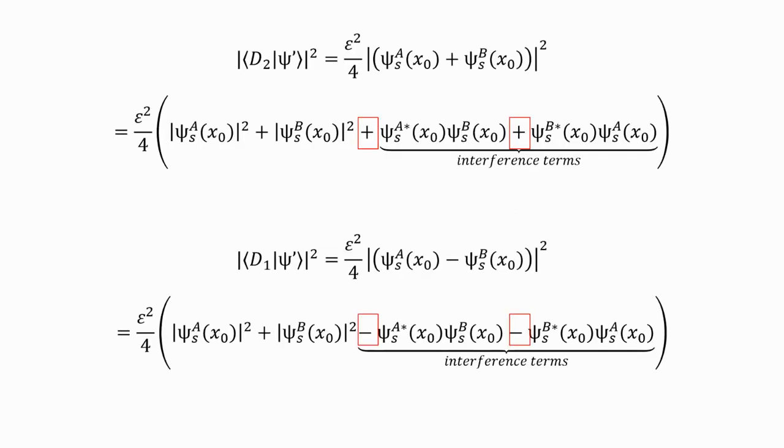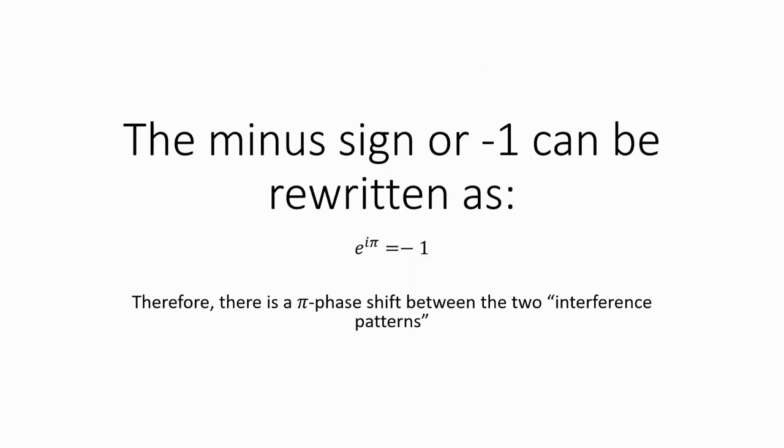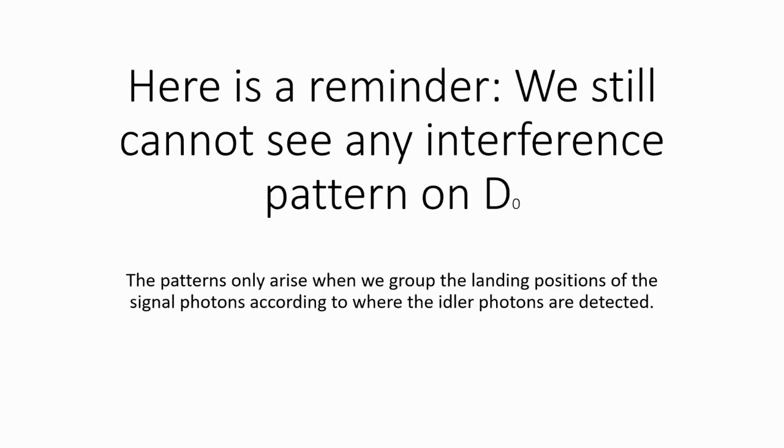The minus sign or minus 1 can be rewritten as... Therefore, there is a pi-phase shift between the two interference patterns. Here is a reminder, we still cannot see any interference pattern on D0. The patterns only arise when we group the landing positions of the signal photons according to where the idler photons are detected.